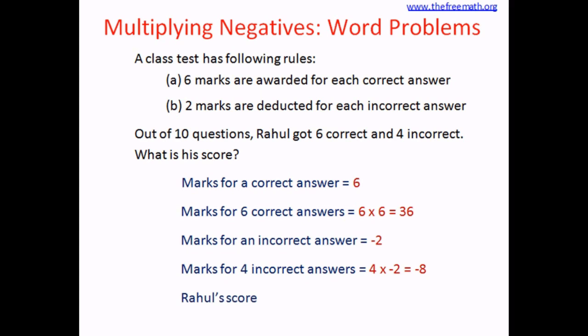So what is Rahul's total score? His score is the marks for correct answers plus marks for incorrect answers: 36 plus negative 8, which equals 36 minus 8, and 36 minus 8 equals 28. So Rahul got 28 marks.